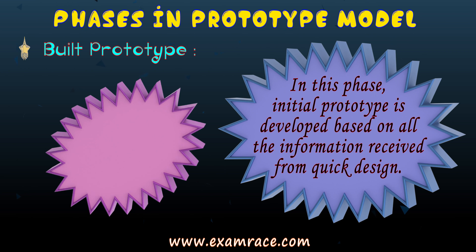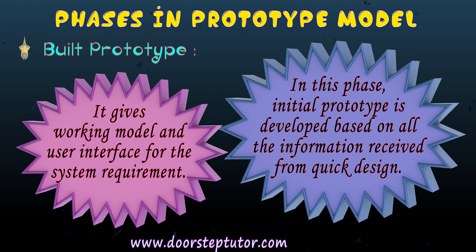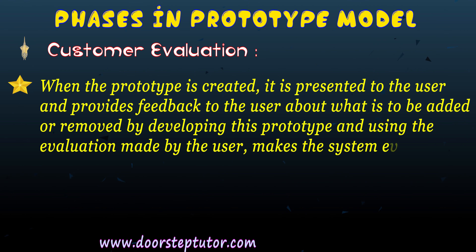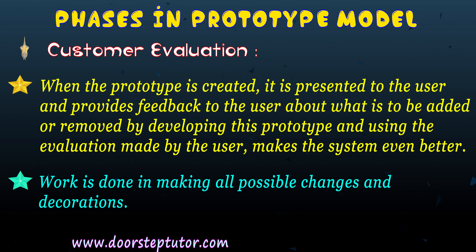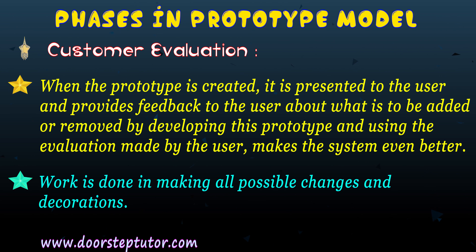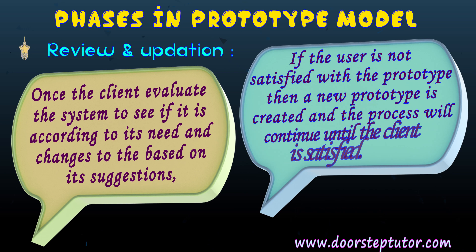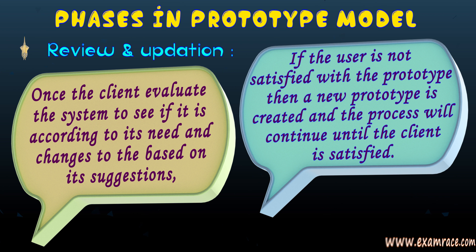The third step is to build the prototype — here we create the user interface, the basic working model or front-end for the system. The fourth step is customer evaluation: once the prototype is created, we get it checked by the customer. Based on the customer's feedback, we determine whether it needs further updates or meets the requirement. The fifth step is review and updation: if the feedback is not up to the mark, we review the system again and update it to get improved results.